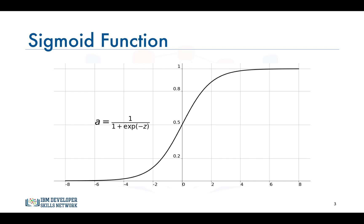As the gradients approach 0, the network doesn't really learn. Another problem with the sigmoid function is that the values only range from 0 to 1, meaning the sigmoid function is not symmetric around the origin and the values received are all positive. Not all the time would we desire that values going to the next neuron be all of the same sign. This can be addressed by scaling the sigmoid function.